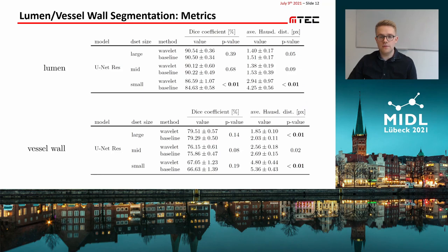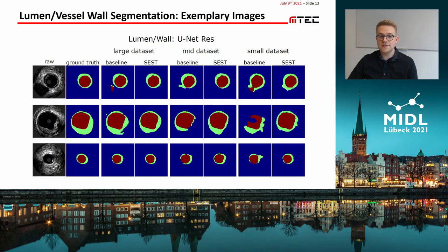For lumen and vessel wall segmentation, the outperformance by using CEST is almost only statistically significant for the smallest dataset. The improvements are generally smaller compared to the improvements on the calcium segmentation task. Here again, some exemplary images: the largest differences are visible for the smallest dataset. But even for the mid-sized dataset, the baseline CNN has difficulties predicting the vessel wall as a closed ring, as can be seen in case 2 and case 3, whereas the CEST approach is able to do so.